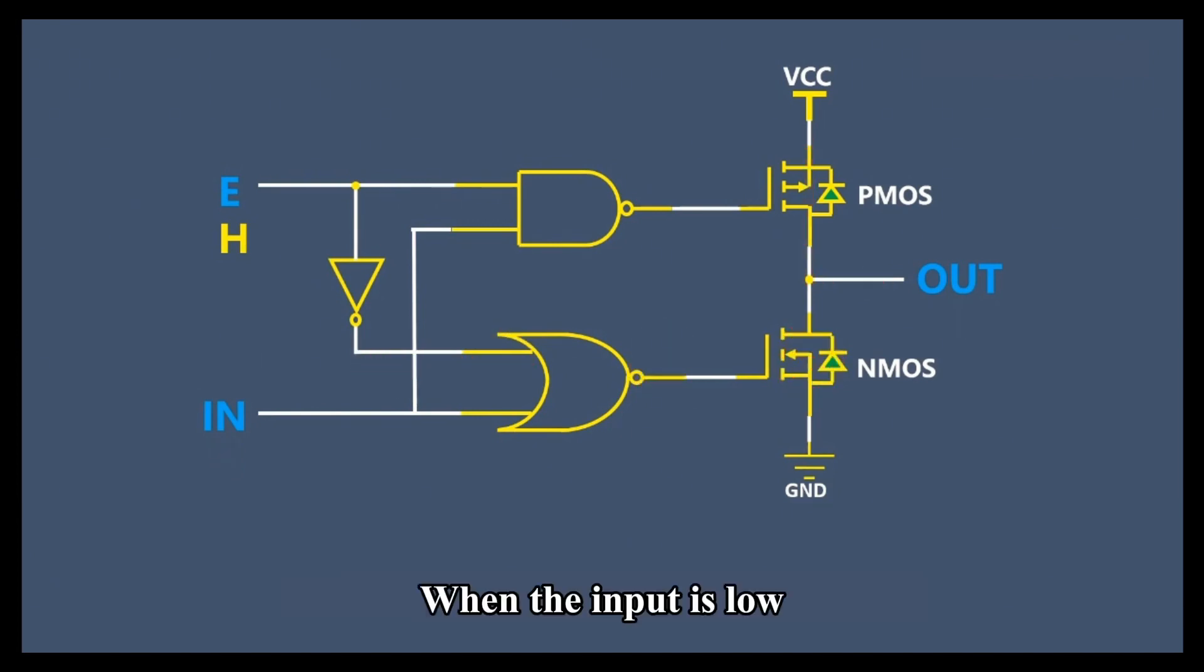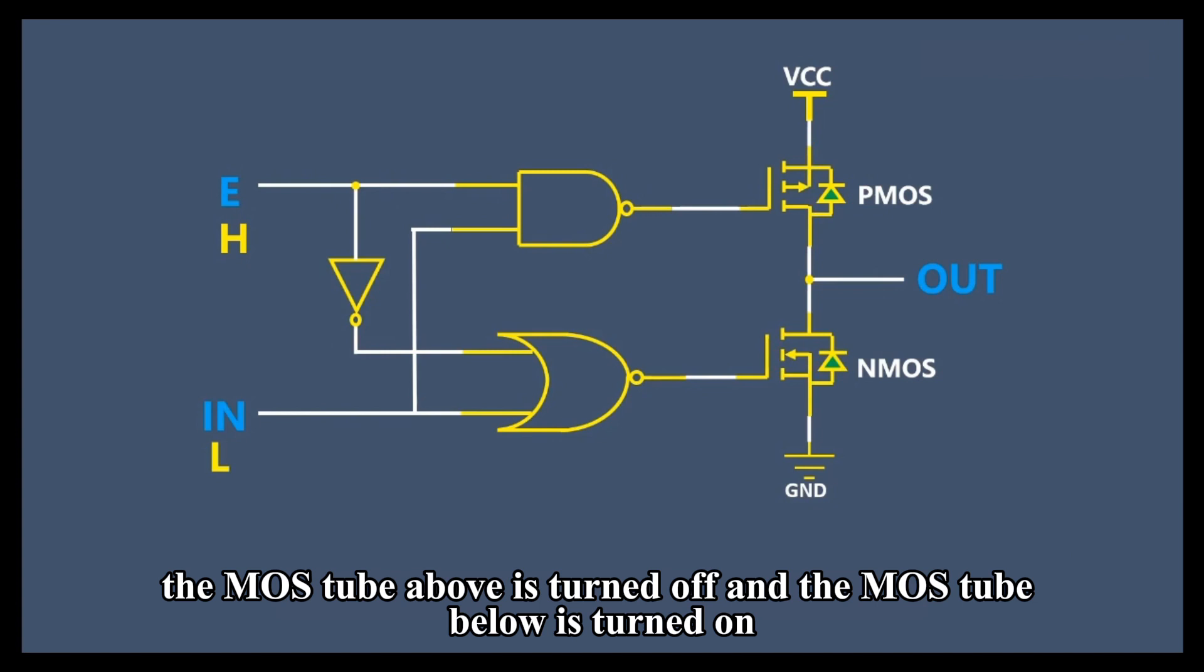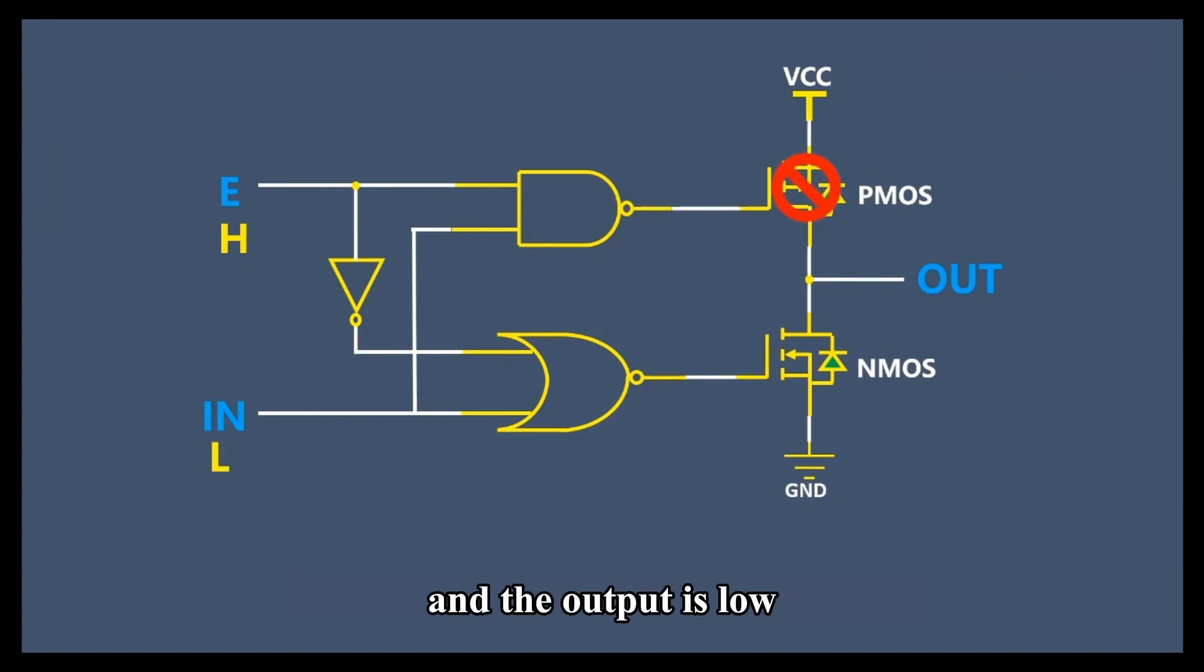When the input is low, the MOS tube above is turned off and the MOS tube below is turned on, and the output is low.